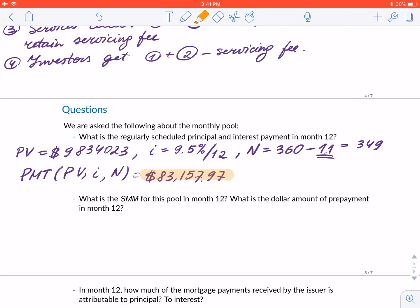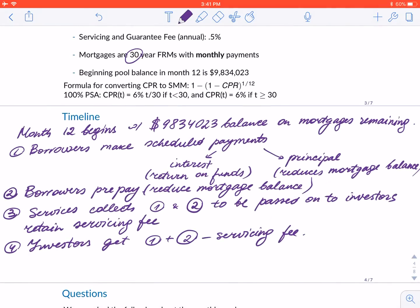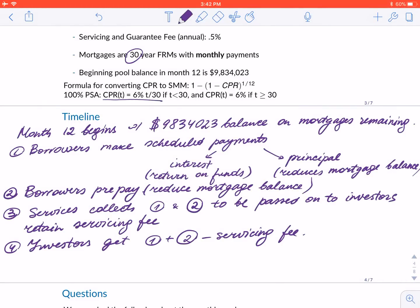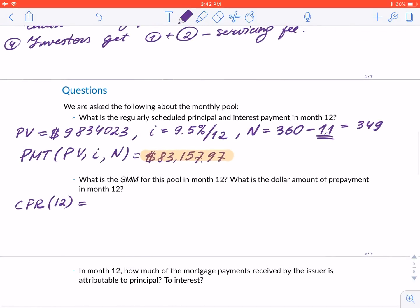The next question is: what is the single month mortality rate for this pool in month 12 and what is the dollar amount of prepayment? Before we compute SMM, we first need to get the conditional prepayment rate. CPR at month 12 uses the PSA formula. Since t is less than 30, we use CPR = 6% × 12/30 = 2.4%.